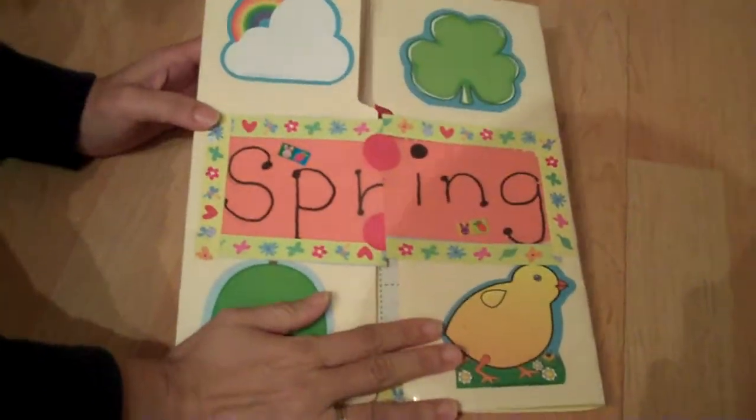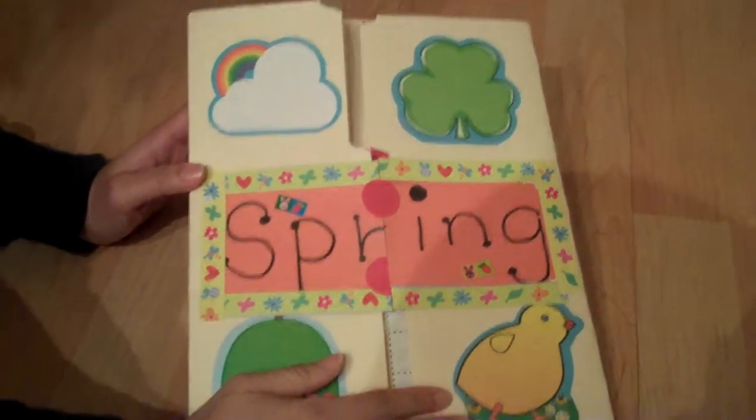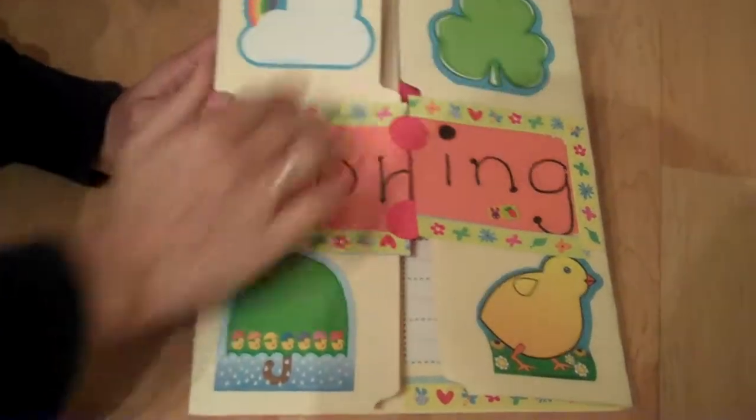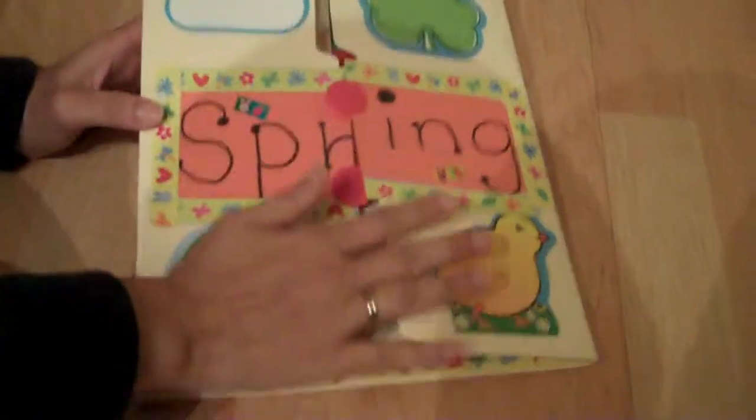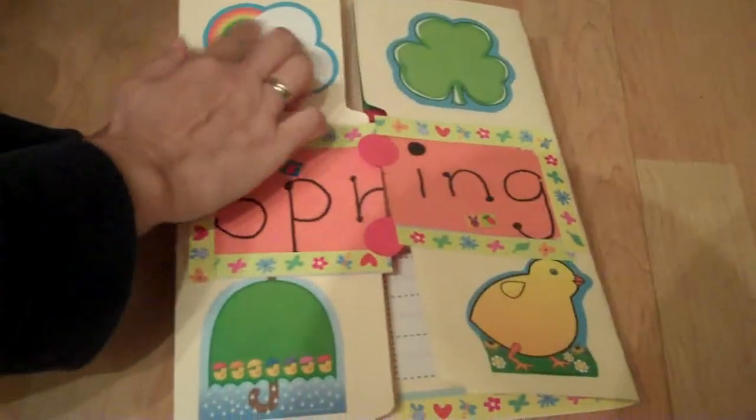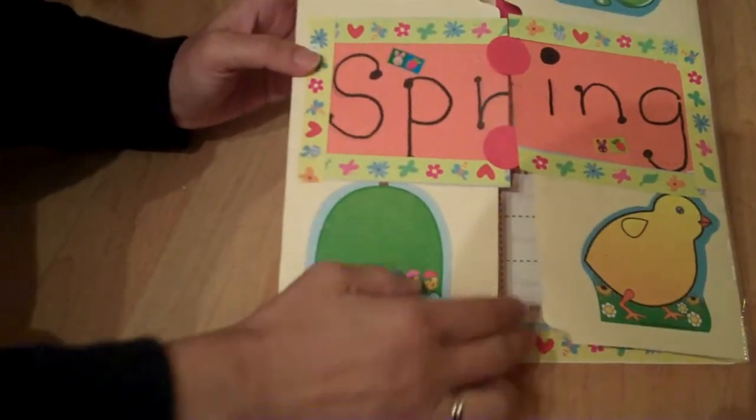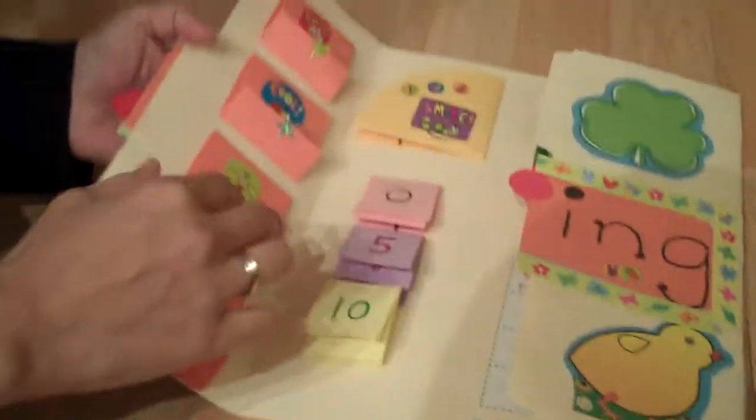So today we are looking at a spring book, a lap book for spring. I just made it today. You can see some pictures. I like to be colorful. The rainbow, the shamrock leaf, and the chick, and the spring shower. So you open it up.